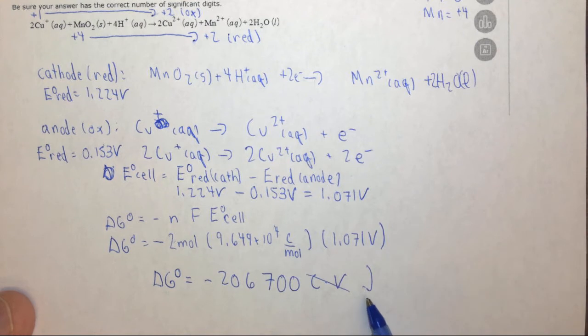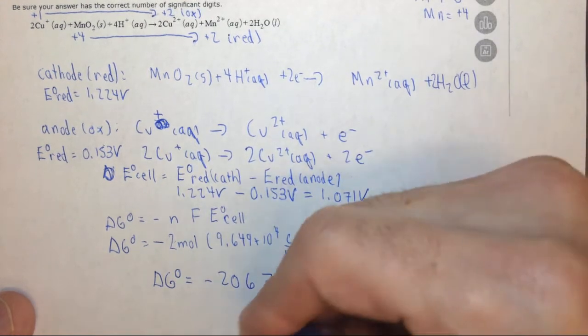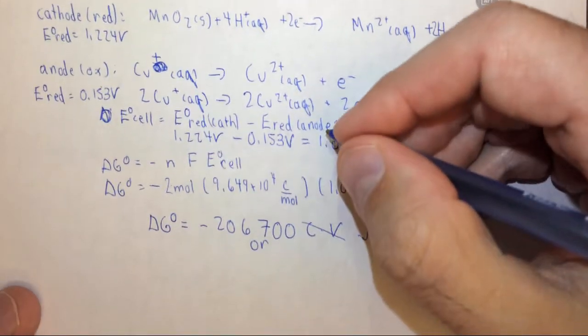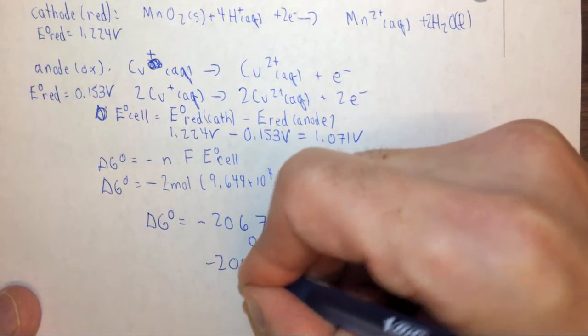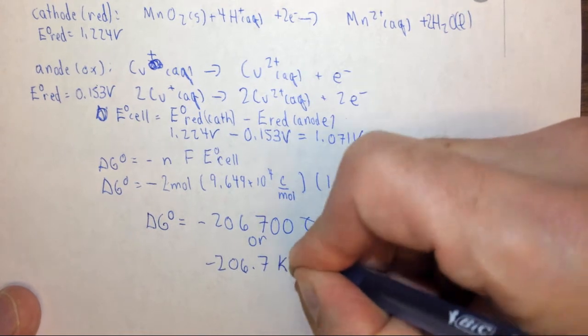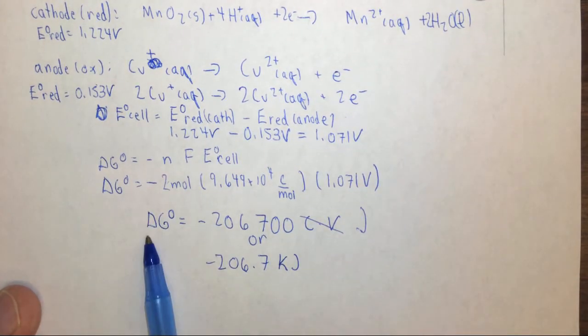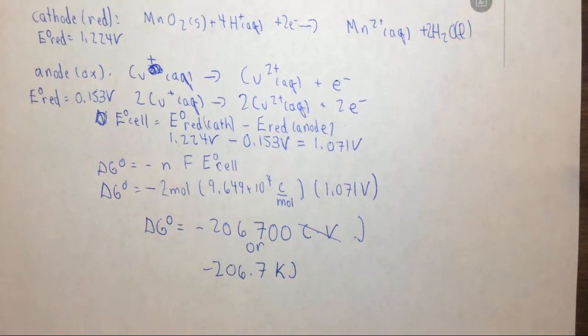So now we could just convert to kilojoules if we want to make it a more convenient number, divide by a thousand. So if we divide this by a thousand, we get negative 206.7 kilojoules as the free energy for this reaction.